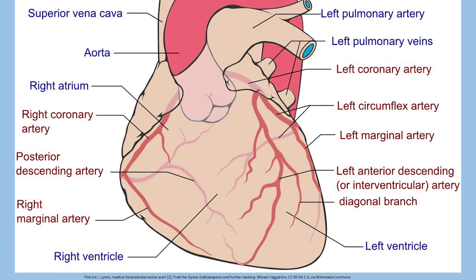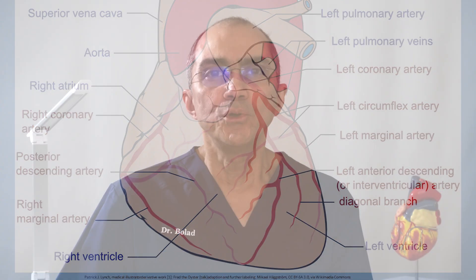During its course, the left anterior descending artery supplies branches to the left ventricle, the main pumping chamber of the heart. These branches include the septal arteries, supplying the interventricular septum separating the right from the left ventricle, and the diagonal branches, supplying the left lateral part of the heart. Like all arteries, the LAD becomes smaller in size as it courses from the origin toward the apex.